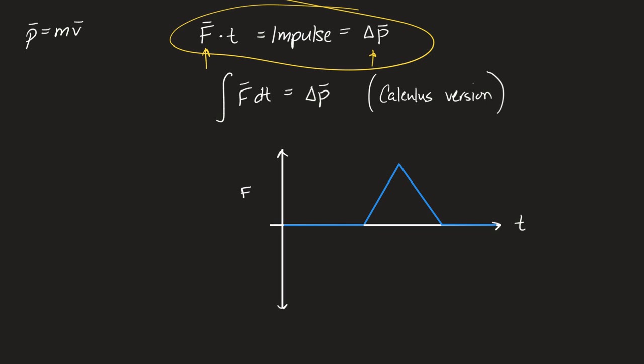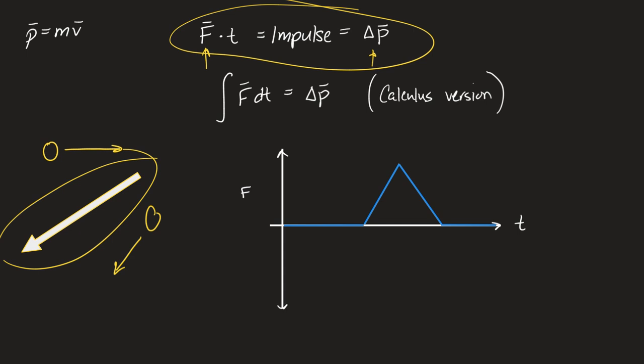For example, if you had a puck on the ice going one way, and then a moment later the puck is traveling a different way, what direction was the force acting on the puck? The only way to stop the puck and redirect it is if the force was acting in that new direction. That will be the direction of the change in momentum because it is the direction of the unbalanced force acting on the object.